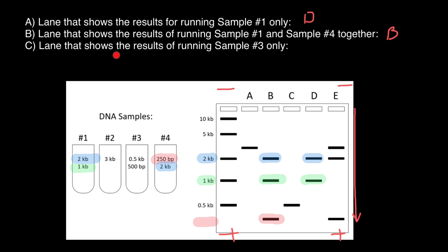The last question, line that shows the results of running sample three only. Here is sample three. If you think we're looking for two bands, actually we're looking for only one band because 0.5 kilobases is the same as 500 bases. Kilo means 1000, half of 1000 is 500. Here we have kilobases, here we have bases. We're looking for just one band. Both can be different fragments of DNA with different sequences, but because they're the same size, they form one band.